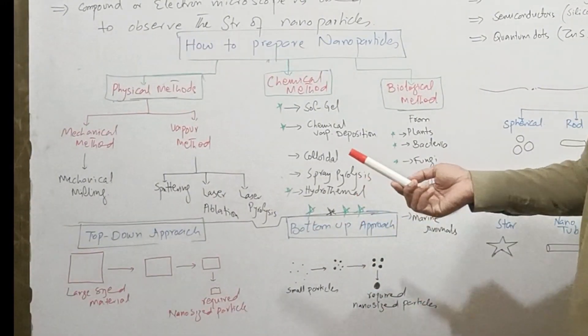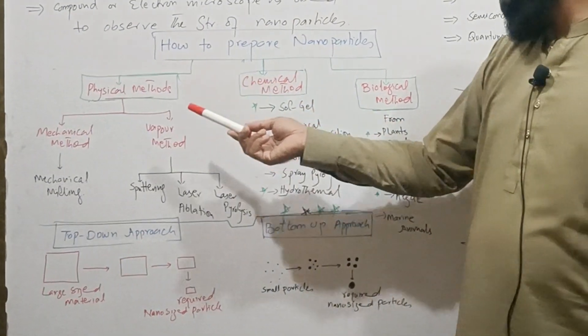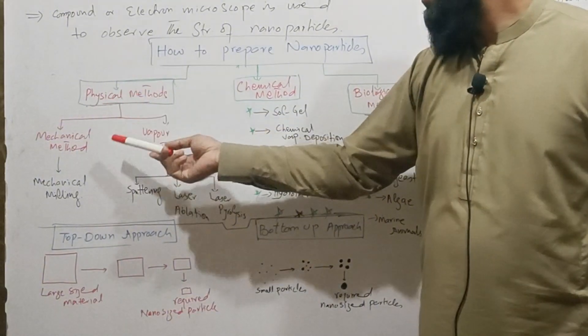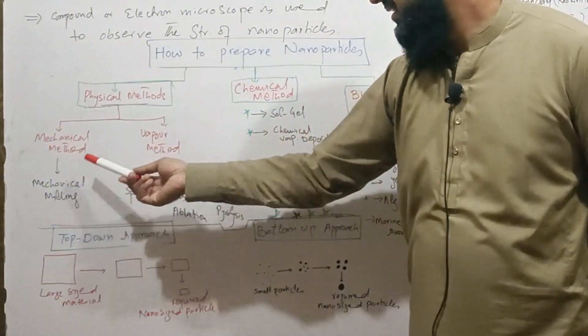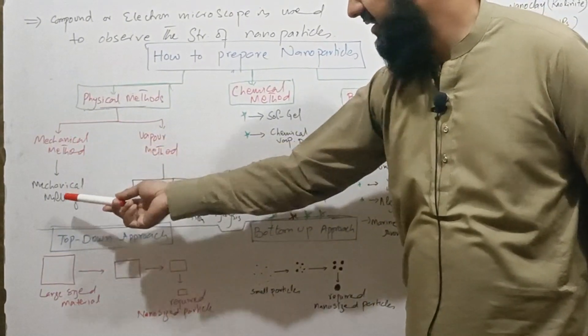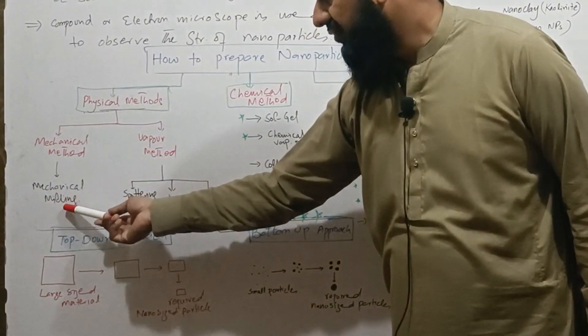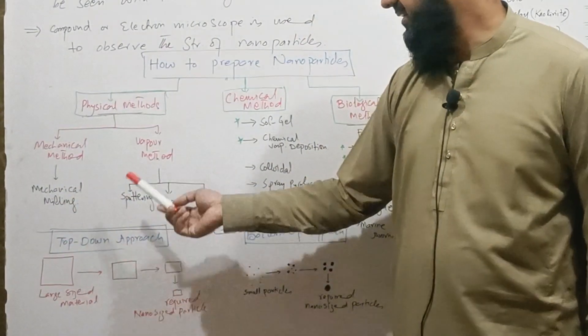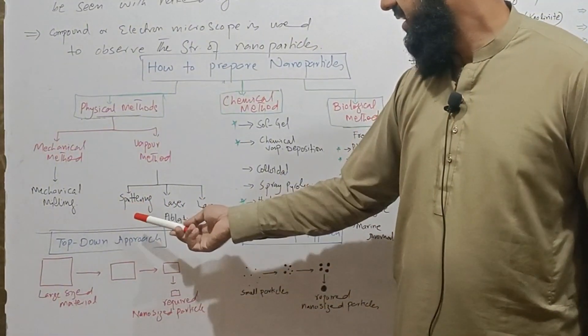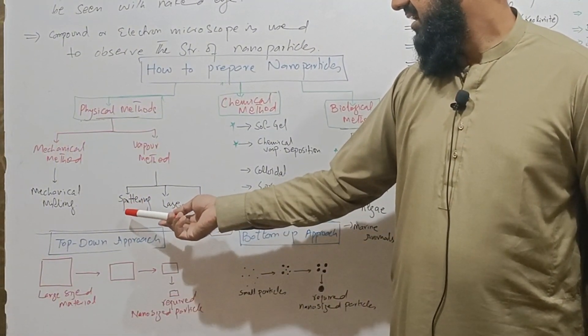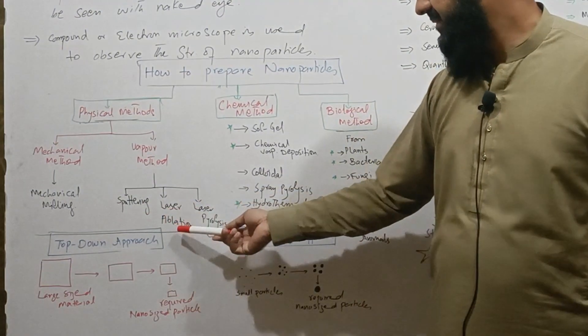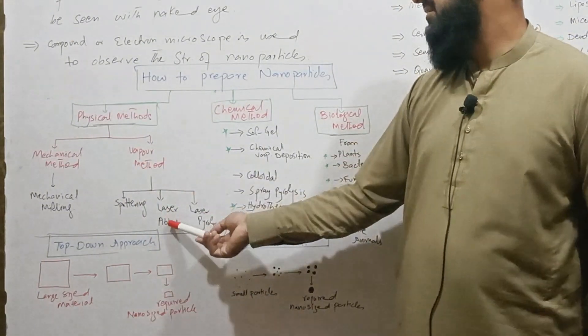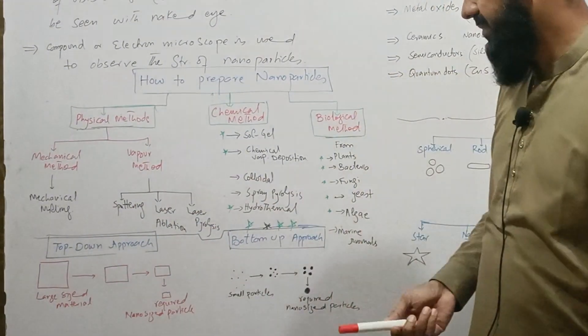There are three methods to synthesize or prepare nanoparticles: physical method, chemical, and biological method. There are two types of physical method: first is mechanical, other is vapor methods. In mechanical method we perform mechanical milling through which we use top-down approach. In vapor method we use sputtering which is also called physical vapor deposition method, laser ablation, and laser pyrolysis.